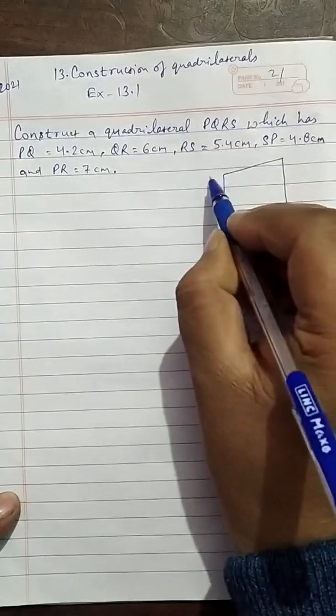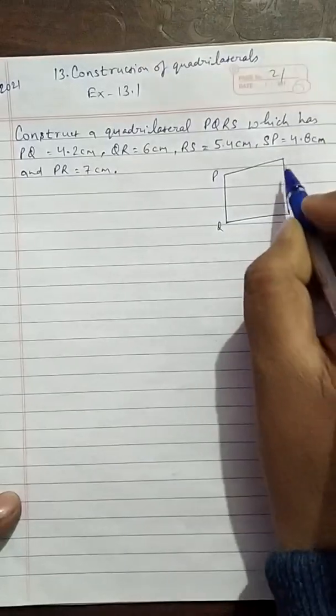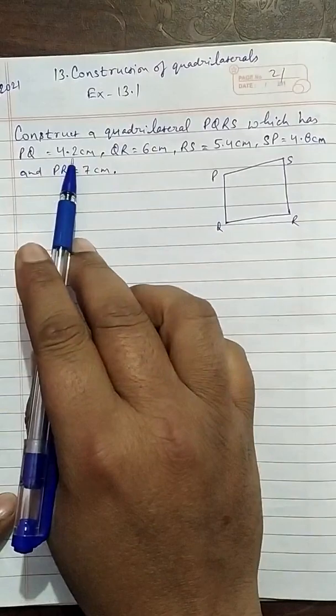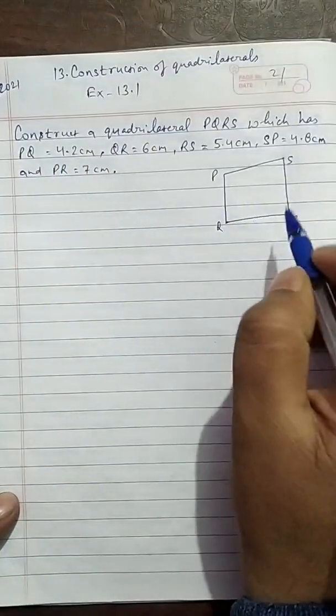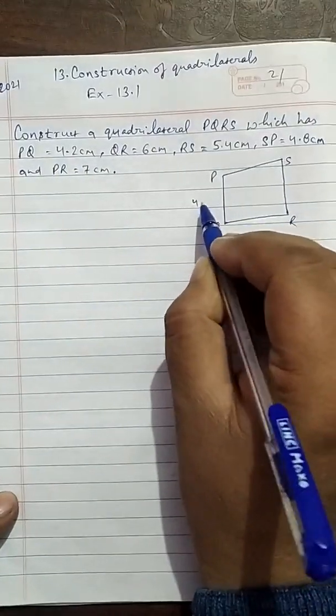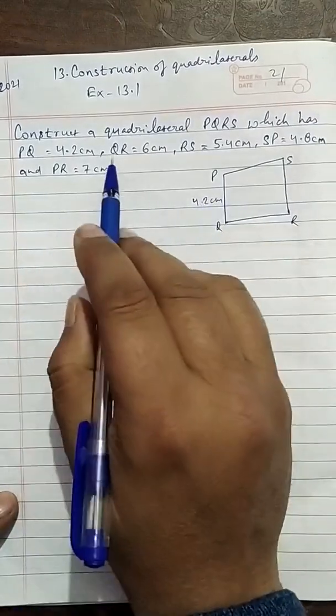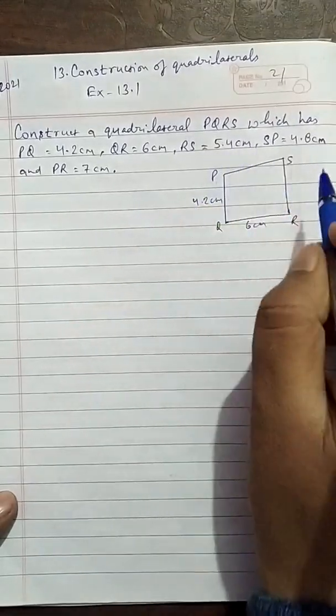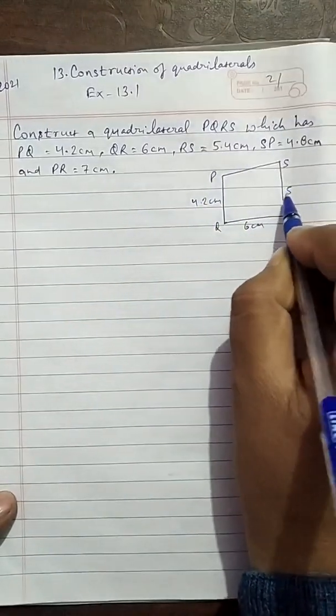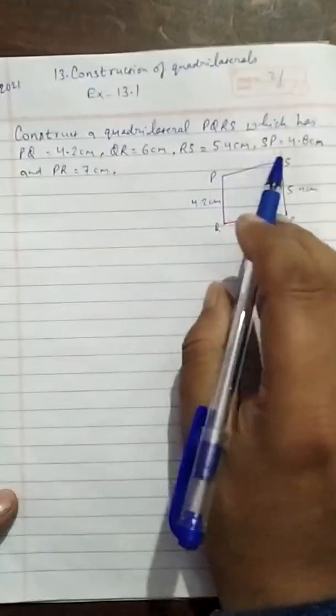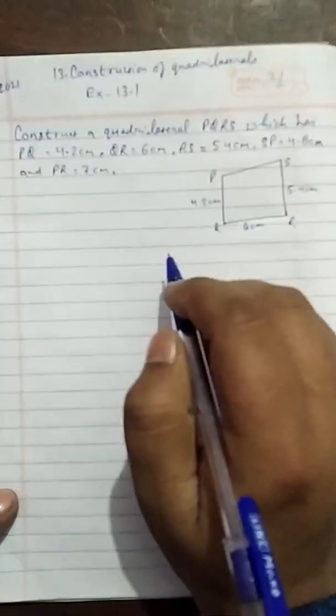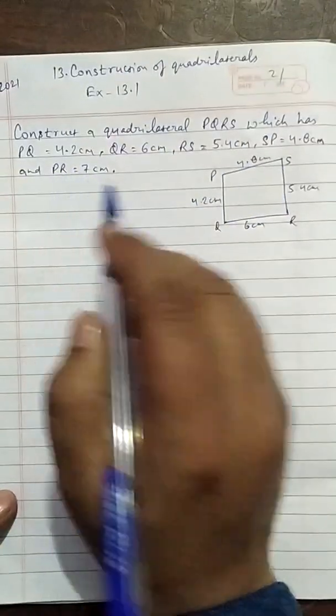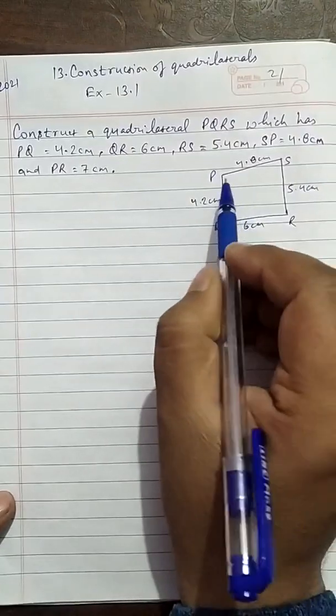This is PQRS. PQ is 4.2cm, QR is 6cm, RS is 5.4cm, SP is 4.8cm and PR is 7cm. PR is the diagonal.